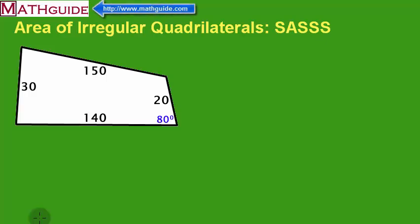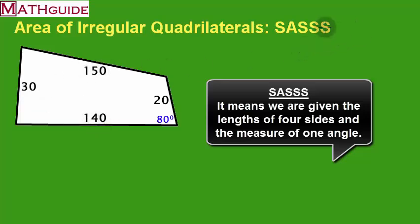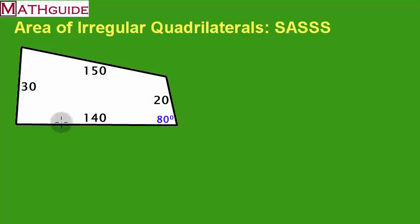This is MathGuide.com. My name is Mark Karadimos. Today we're going to take a look at how to calculate the area of an irregular quadrilateral using the abbreviation SASSS — side, angle, side, side, and side. So we basically have four sides and one angle given for the problem. I'm going to demonstrate how to calculate this, which will involve several trigonometry formulas.